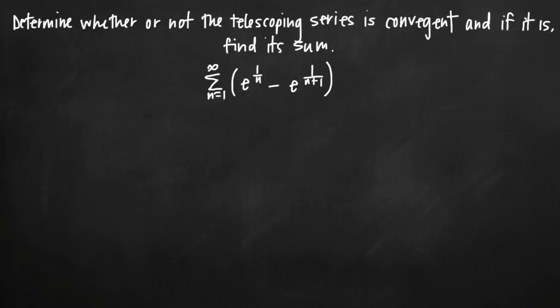Today we're going to be talking about how to determine whether or not a telescoping series is convergent or divergent, and if it is convergent, how to find its sum. In this particular problem we've been given the telescoping series, which is the infinite sum from n equals 1 to infinity of e to the 1 over n power minus e to the 1 over n plus 1 power.